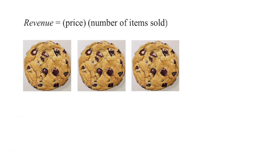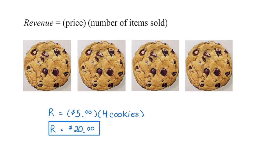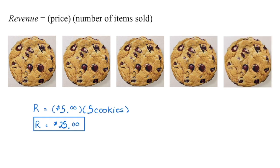Revenue is the amount of money we make. If I'm selling a product like cookies, my revenue is determined by the price I charge multiplied by the number sold. So if I sell three cookies at $5 each, my revenue is $15. This is different from profit — with profit, we subtract the expenses of making those cookies. Revenue is simply how much money we make from selling our product. If I sell four cookies, revenue is $20; five cookies, $25.